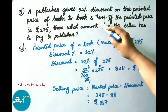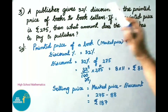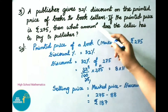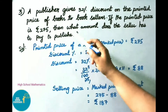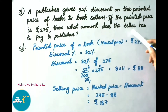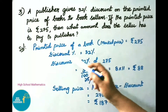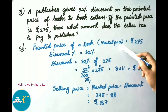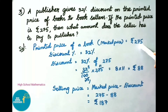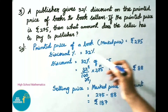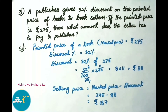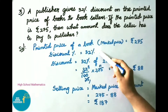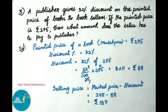Question number three: a publisher gives 32% discount on the printed price of books to booksellers. If the printed price is 275 rupees, then what amount does the seller have to pay to the publisher? The printed price of a book, which is the market price, is given as 275 rupees. The given discount percentage is 32%.